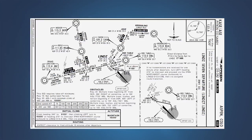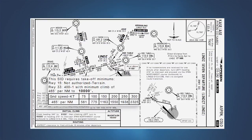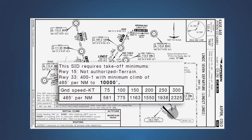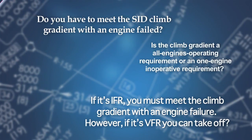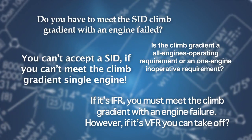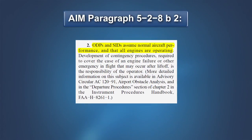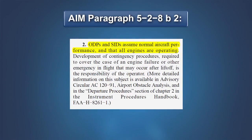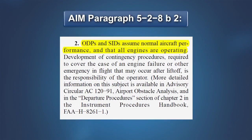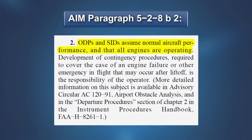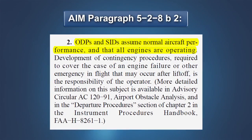IFR procedures like the Lins standard instrument departure often contain minimum climb requirements. As mentioned by our flight crew in the Aspen briefing, this SID has a climb gradient requirement of 465 feet per nautical mile up to 10,000 feet MSL. All IFR departure procedures are based on normal airplane operation and assume that all engines are operating. Compliance with the climb gradient published on a SID or ODP is based on the normal all-engines-operating climb performance of the airplane. There is no requirement to demonstrate compliance with a SID or ODP based on one-engine inoperative performance.